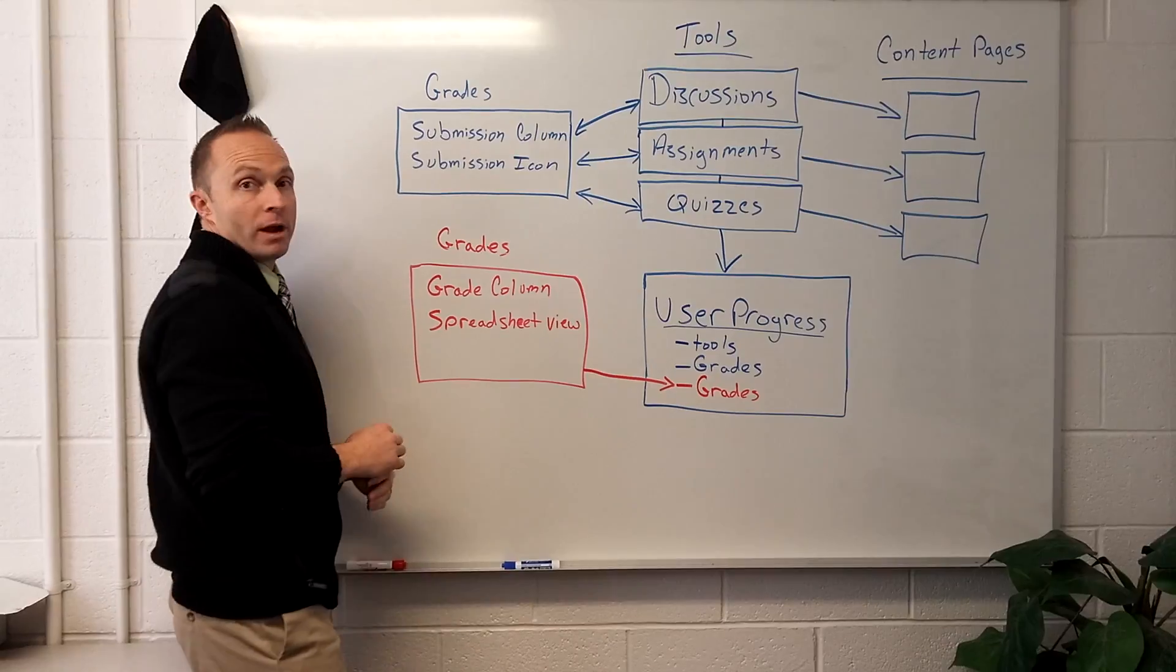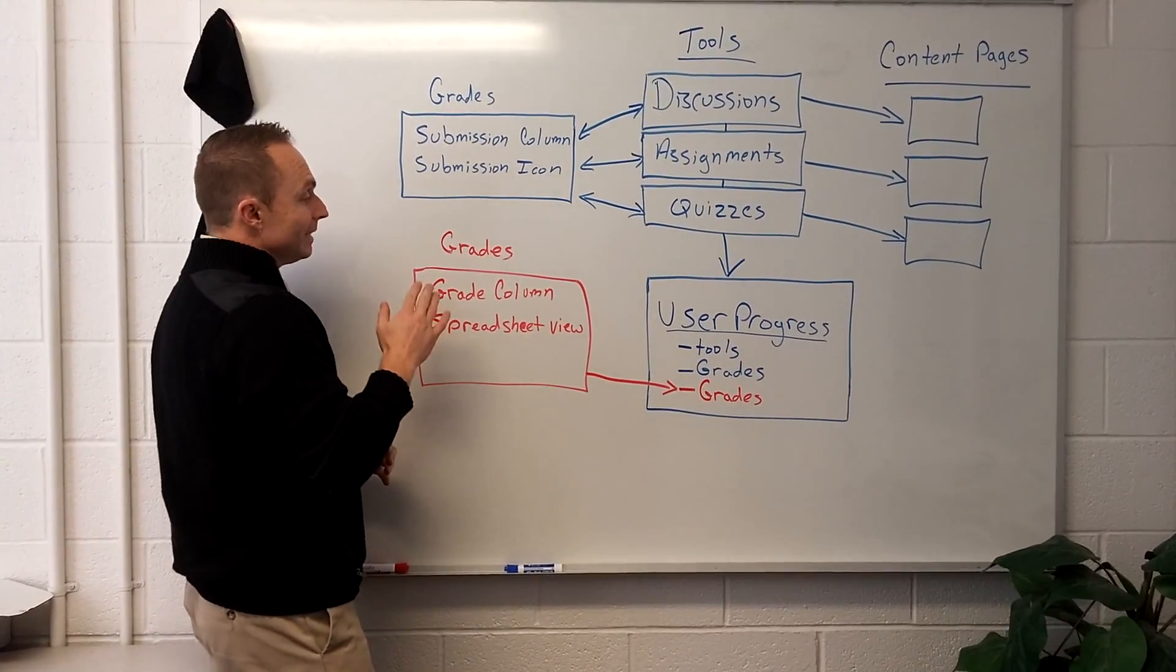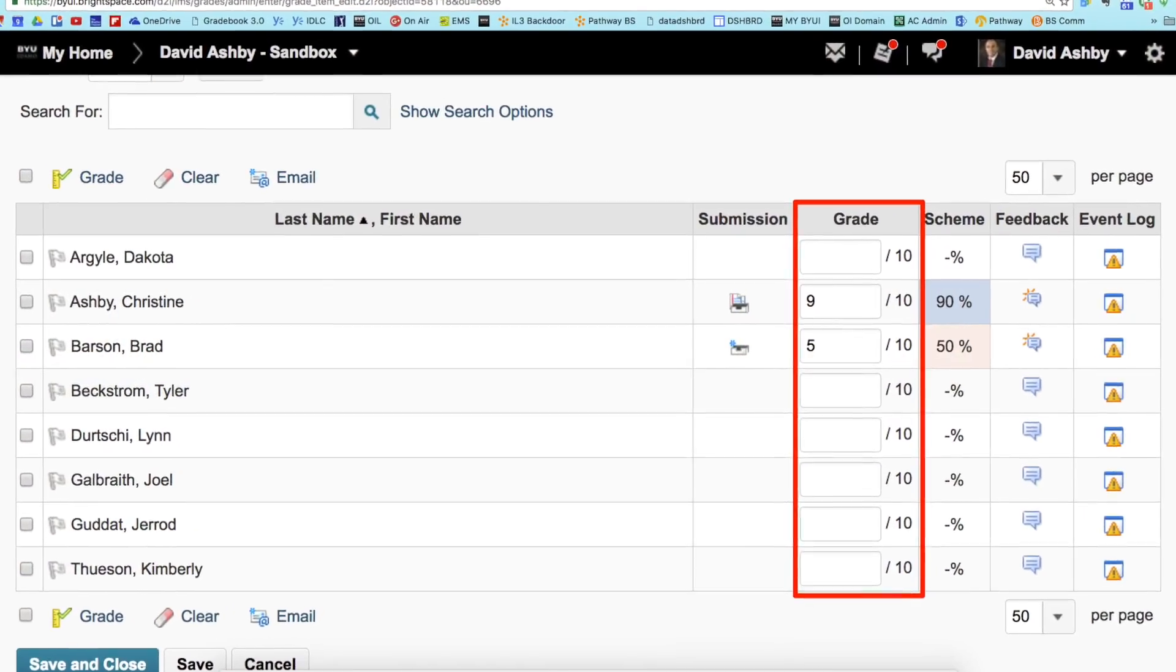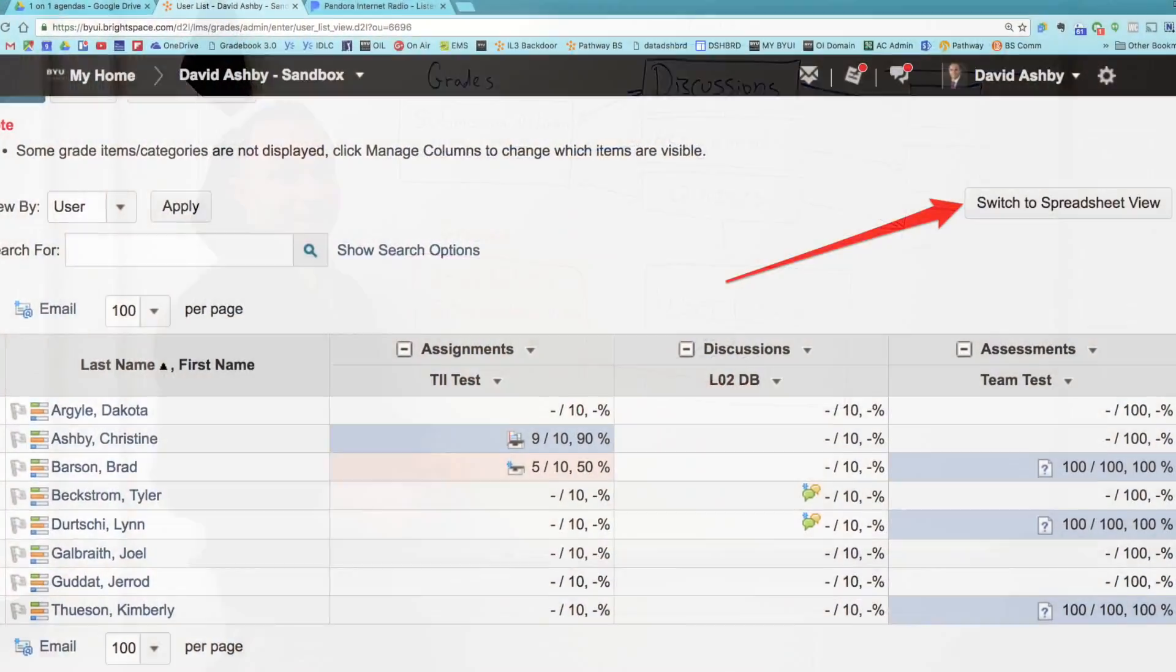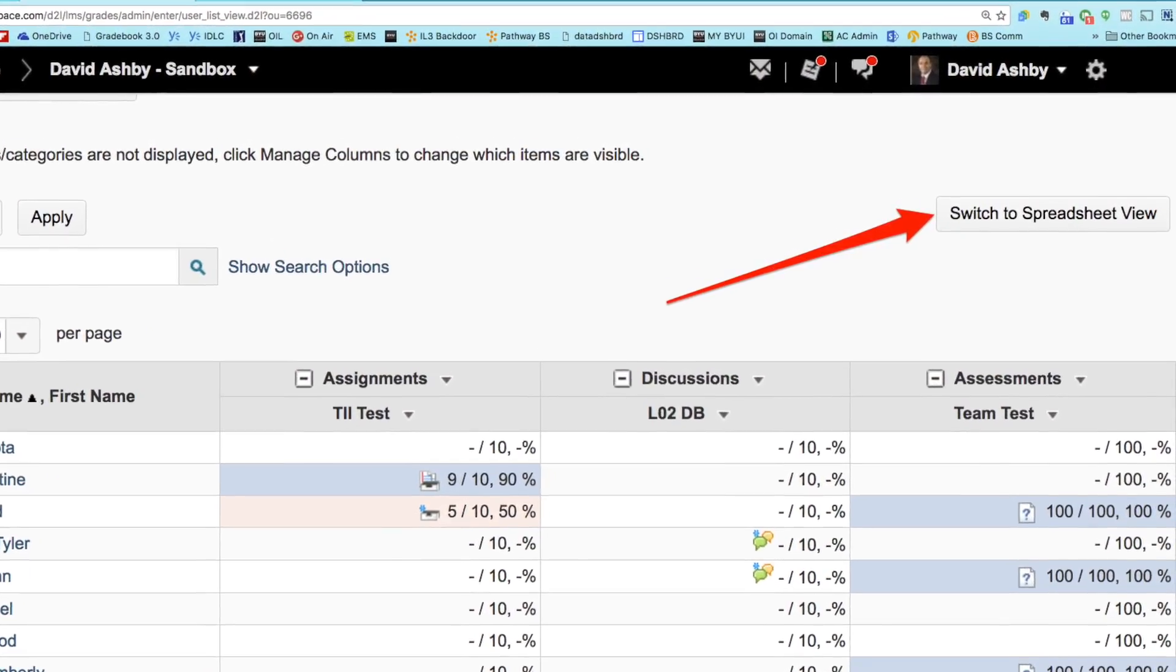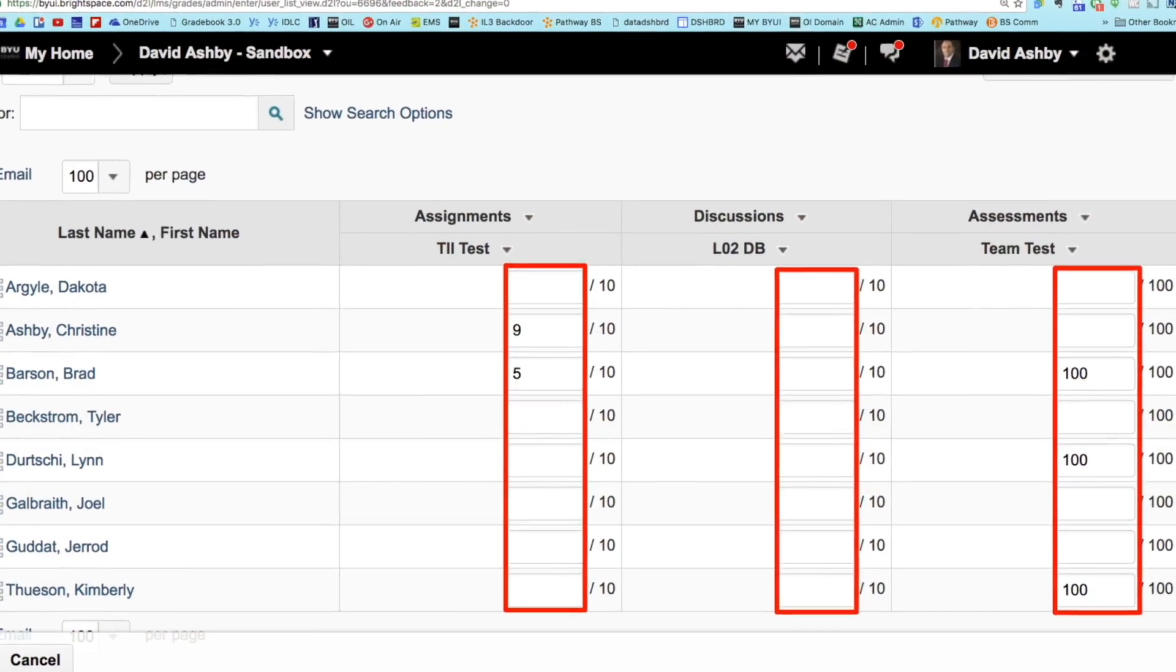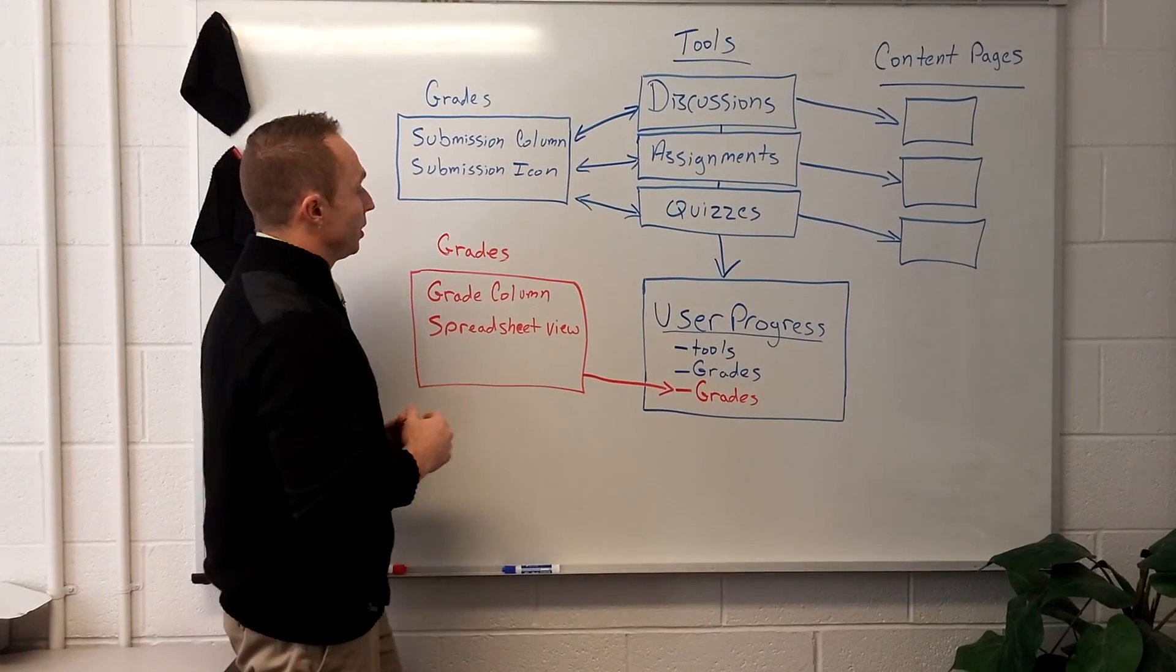But let's talk about grades, the places you don't want to grade. Inside grades, if you're in the grade all screen, there's this place called the grade column. Or sometimes some of you have seen the spreadsheet view as well. There are these nice cells that just ask to say, put a grade in me. It's like just inviting the teacher to put a grade here. The problem with these particular places.